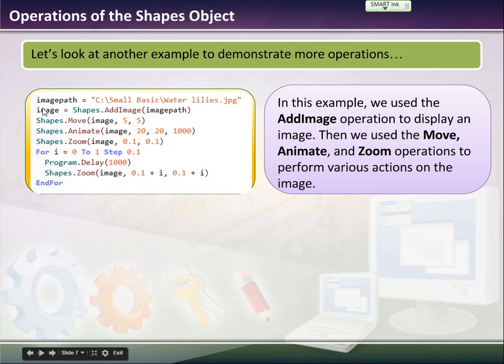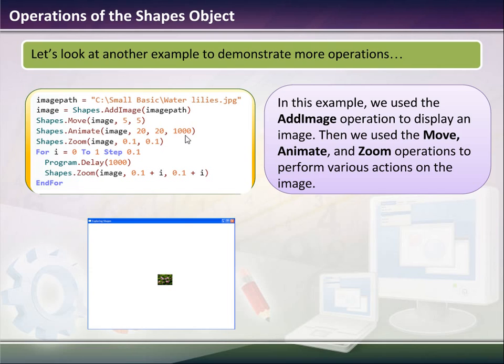Then let the image be a shape added by image path. So now what this does is it'll pull the image by going to this path, which is the hard drive on your computer. You need to know the location of it if it's on your computer. Then you're going to move the image to 5,5. Then you're going to animate it from 5,5 to 20,20,1000. Then you're going to zoom in on it, .1, .1.